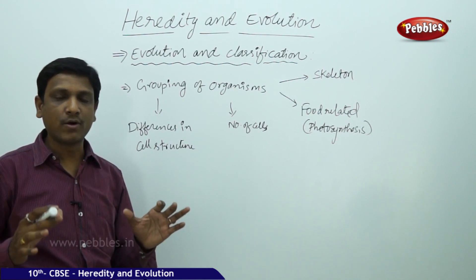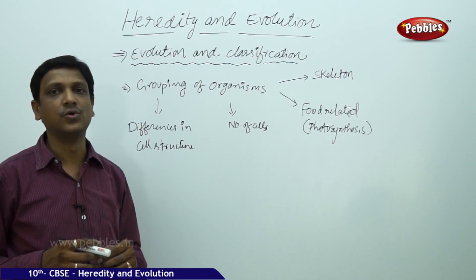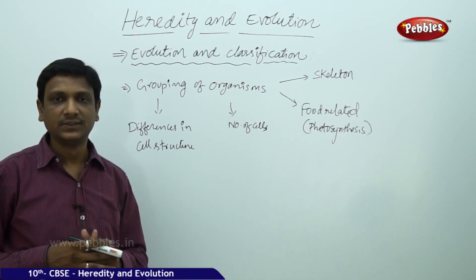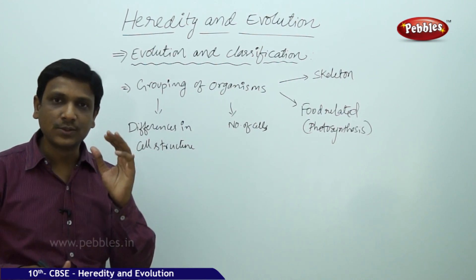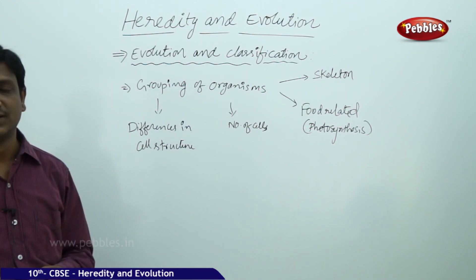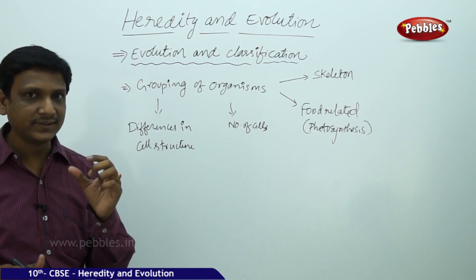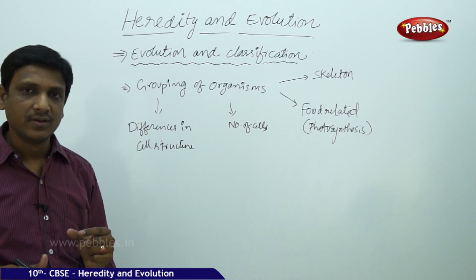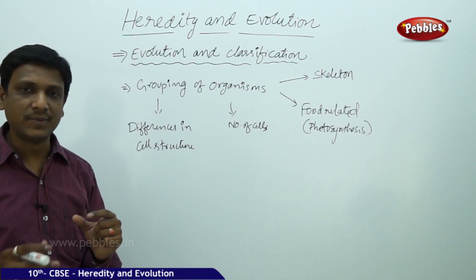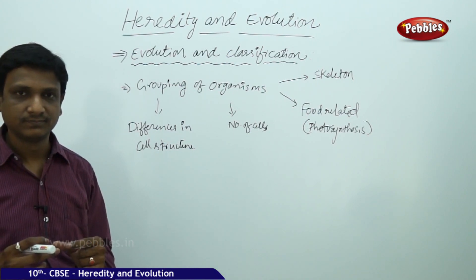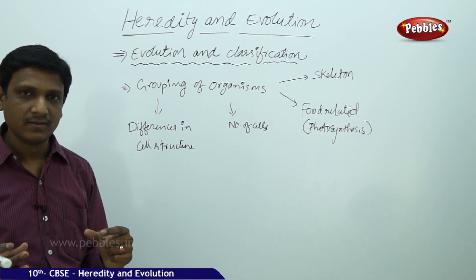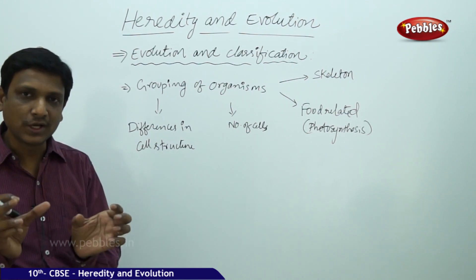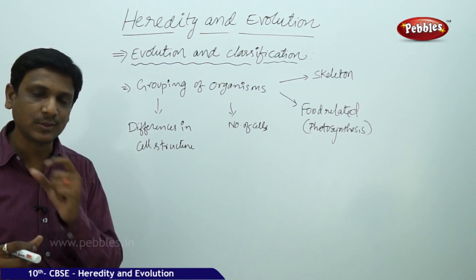Organisms are grouped according to the many characteristics and features they show. Organisms that have similar characters are grouped into one group. This classification also helps us understand the process of evolution — by studying members of closely related groups, you can understand their similarities and relationships.